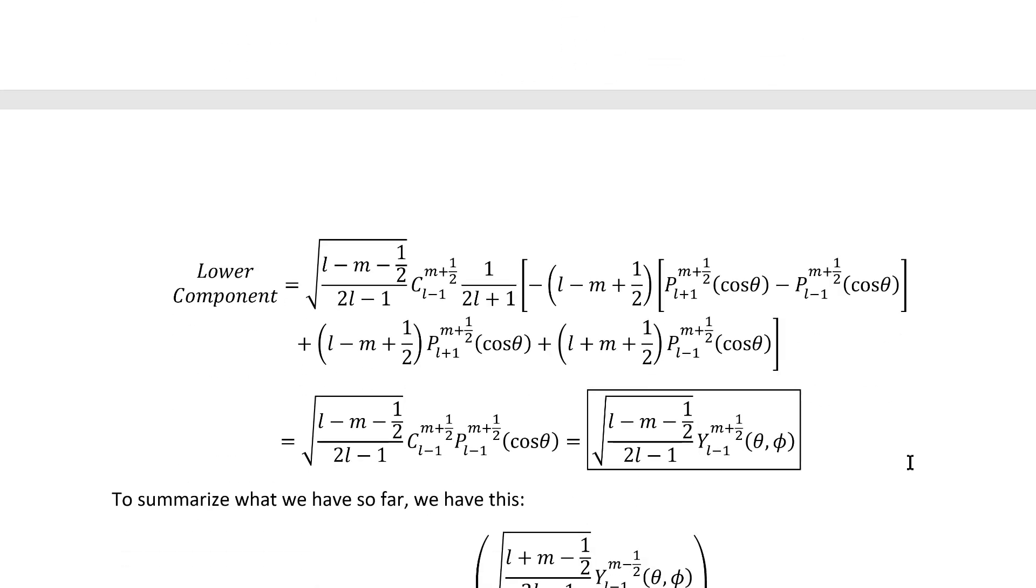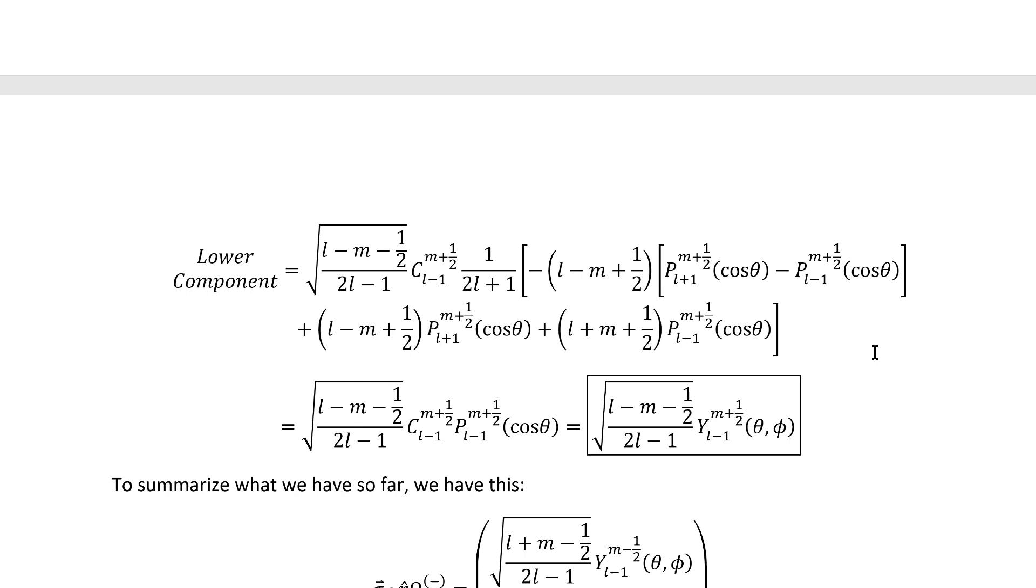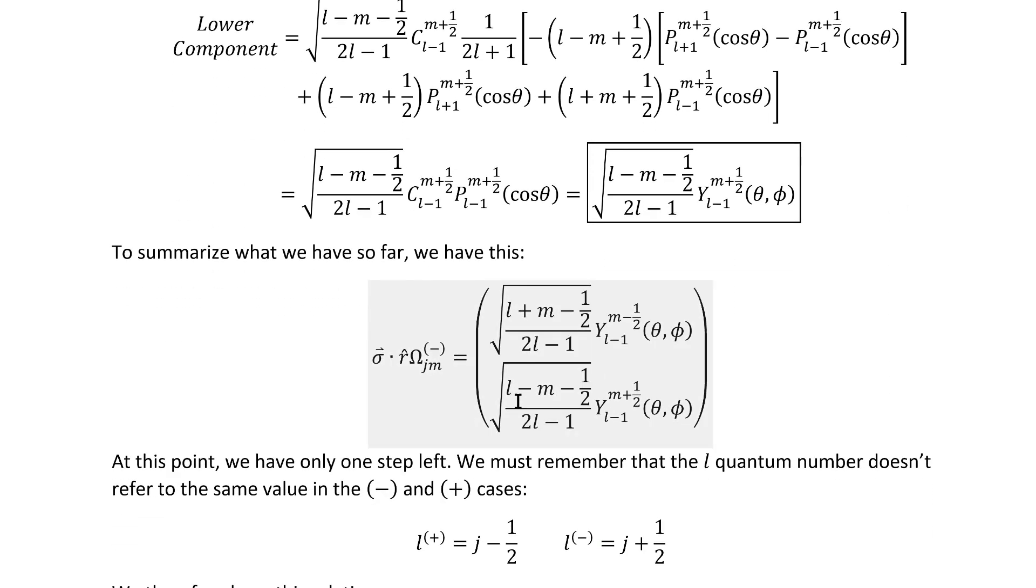But before that, we have to do the lower component. Inserting the recurrence relation formulas that we had sorted out for the lower component immediately gives us this. And again, combining like terms after multiplying everything out gives us a much simplified result, and yet another result that looks similar, but not exactly like what it is that we're going for.